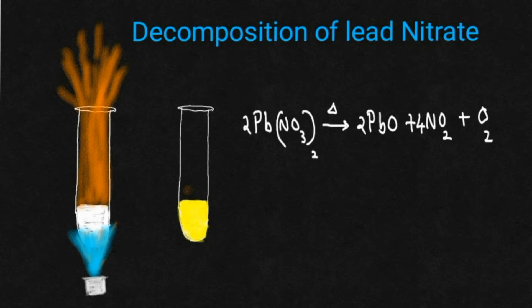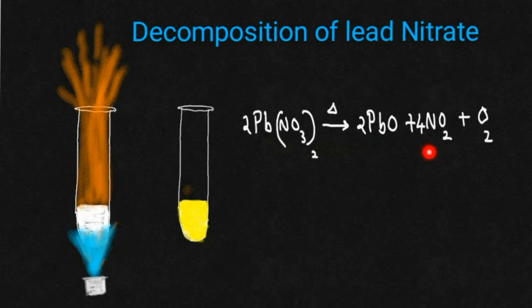Let's start with the decomposition of lead nitrate. Generally we should have an idea that whenever a metal nitrate is undergoing decomposition reaction, you will be getting a metal oxide, nitrogen dioxide, and then oxygen gas also.